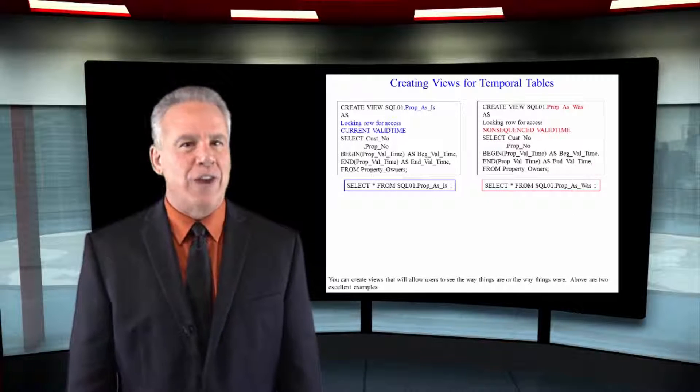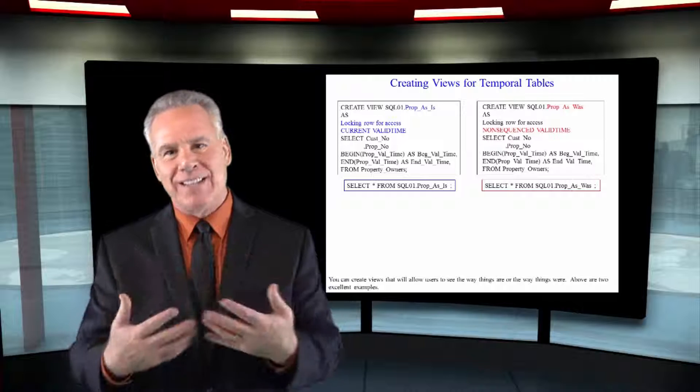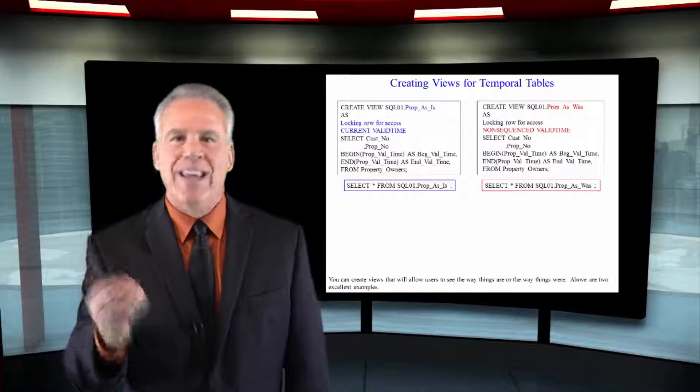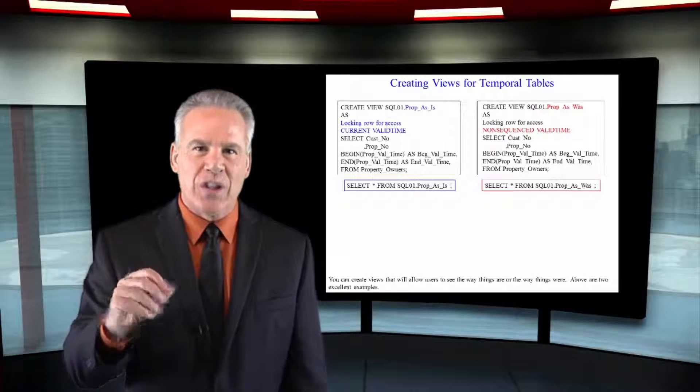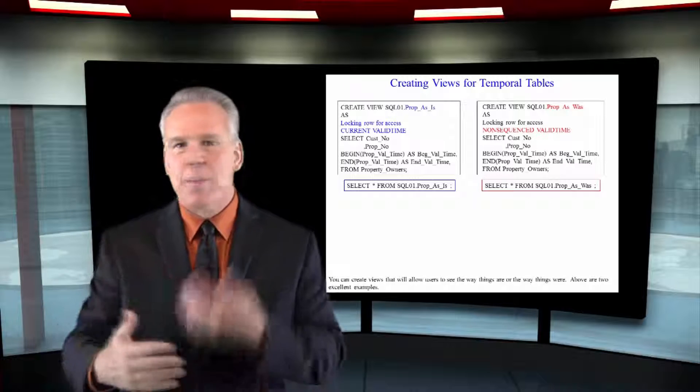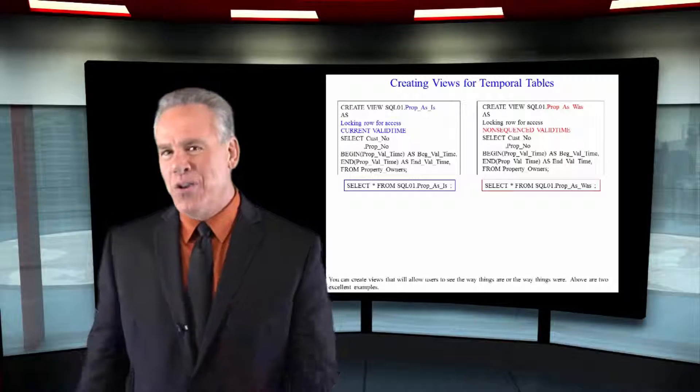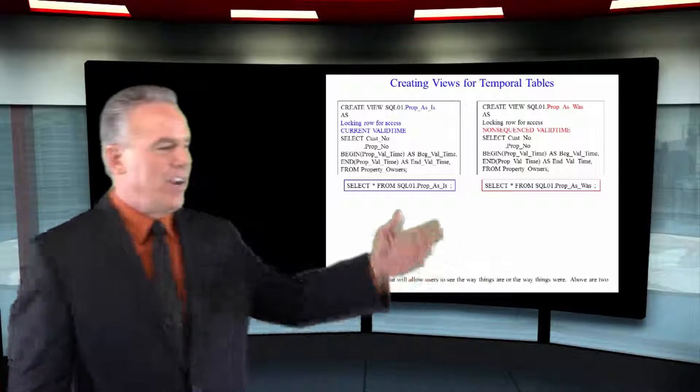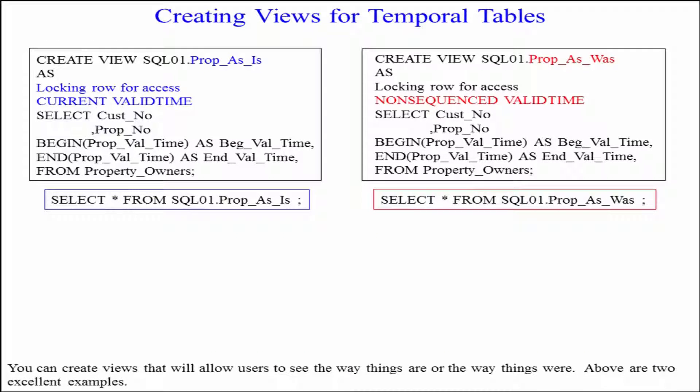A real clever idea to take the complexity out of temporal tables is to create views so that users can use these much easier without knowing those keywords. As you can see here, I created a view as, and I did a current valid time. Whatever day it's queried, they want to know what the current valid rows are.